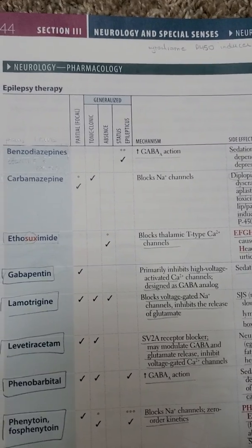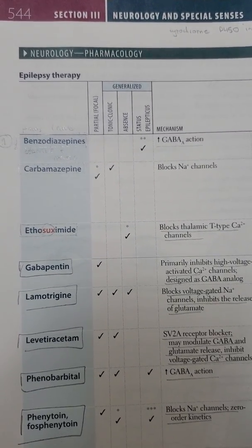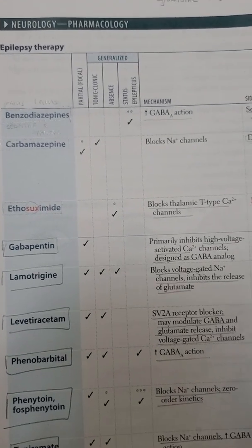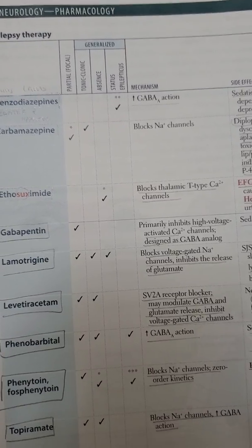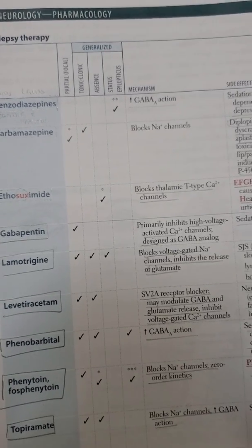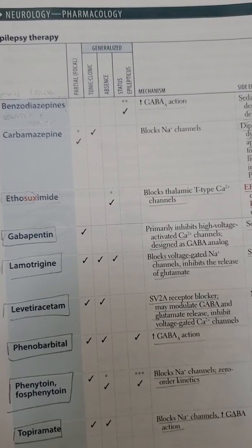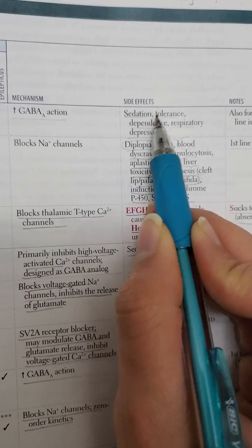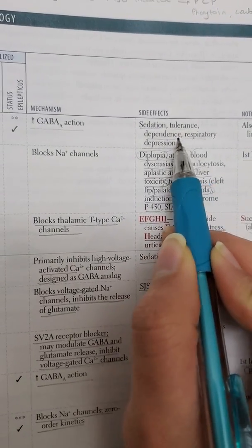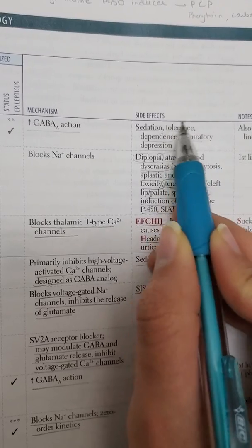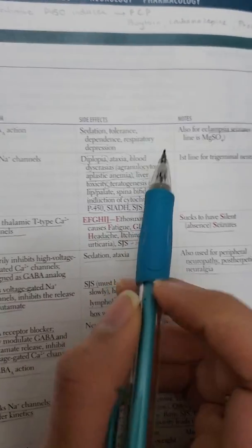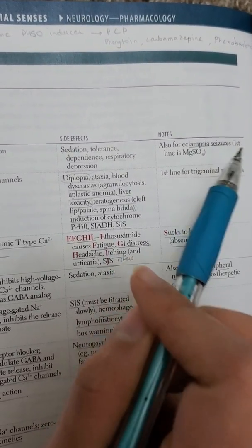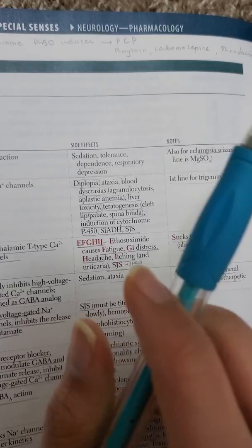If you're overdosing on a benzo, you're more likely to have excessive sedation. The side effects your patient will present with are excessive sedation, respiratory depression, and it is likely to develop tolerance over time. This drug is also used for eclampsia seizures.